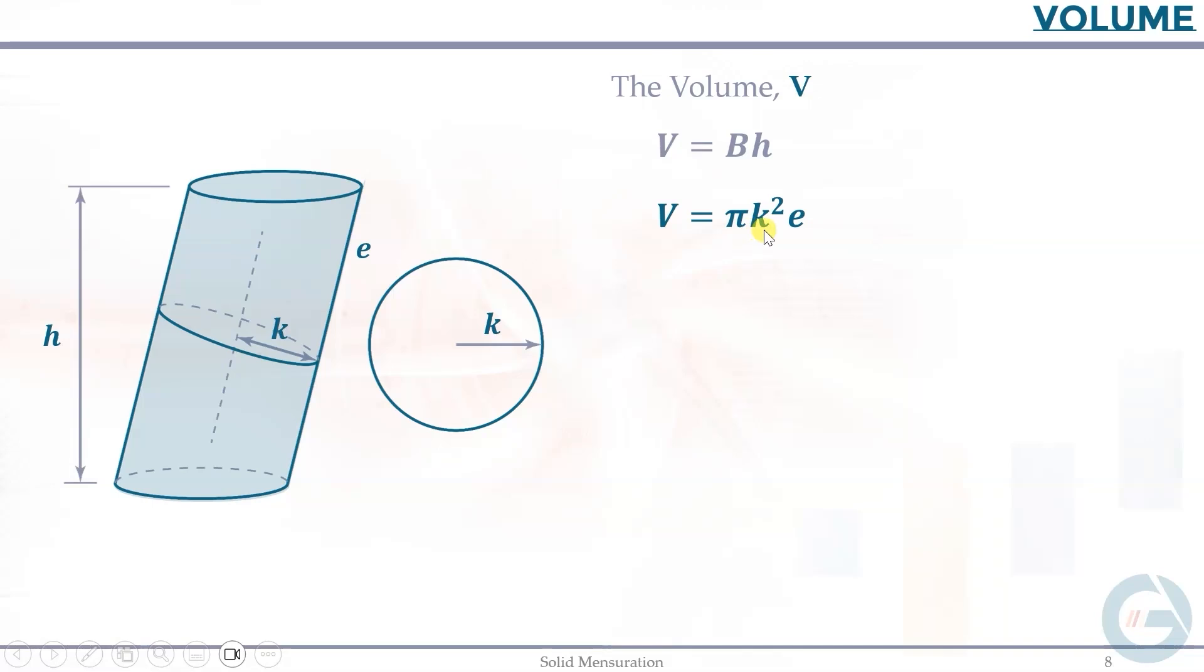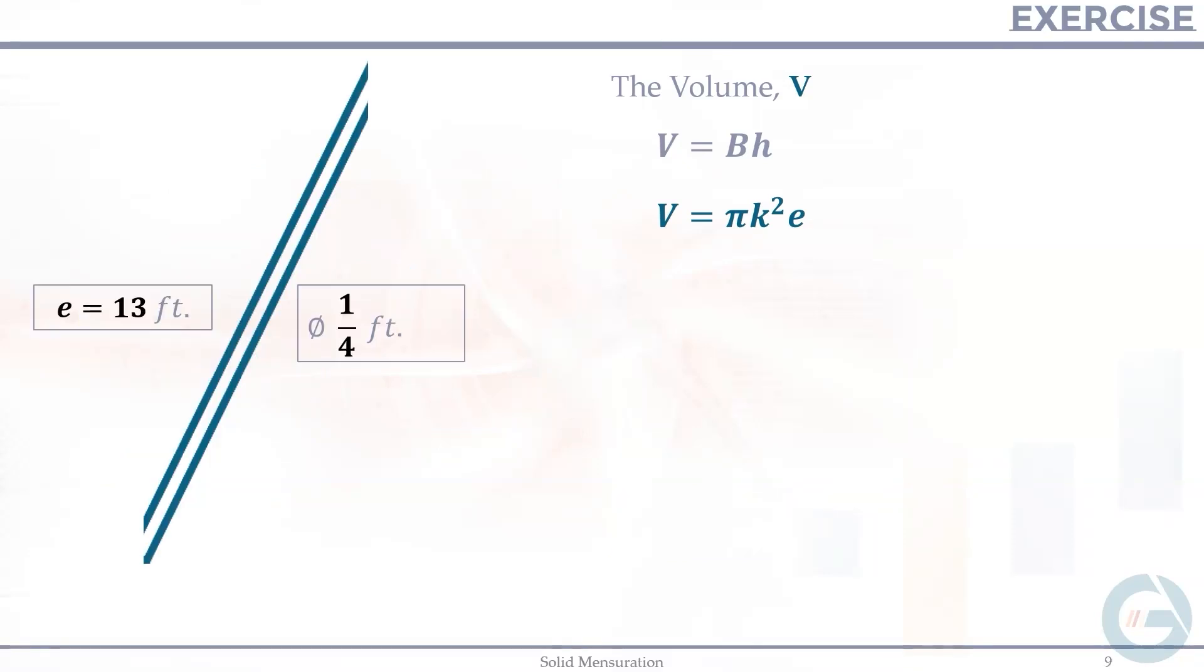So this is pi r squared, the area. But instead of r, we are using the k. So take note that this is the radius, the k. Let's use this equation to the problem. The given is the diameter. So we need the radius for the formula. Of course, 1 fourth divided by 2 is 1 eighth. So that is the radius of the pipe.